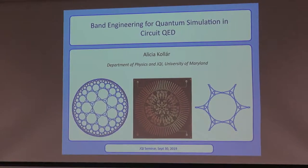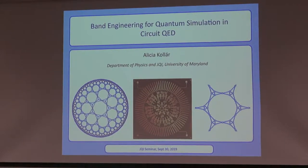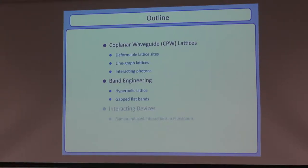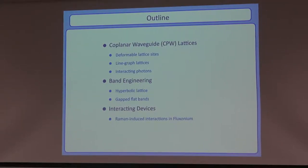Today I'm going to tell you about the things I was developing as a postdoc and will be carrying forward in my research plans. The overarching theme is using band engineering to make more interesting artificial systems with superconducting circuits. My talk has three parts: introducing superconducting circuits as artificial condensed matter systems — either as lattices or spin models — then two examples using unique features of superconducting circuit lattices, namely a hyperbolic lattice and conventional lattices with gap-flat bands, and finally where we're going by incorporating qubits and interactions, with preliminary data from a device aimed at engineering spin models.